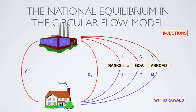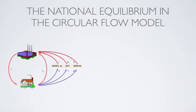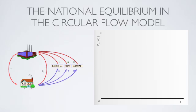These relationships and equilibria can also be shown in a diagram, where national income is plotted on the horizontal axis, and the various components of the circular flow, like domestic household consumption, withdrawals, and injections, are plotted on the vertical axis.